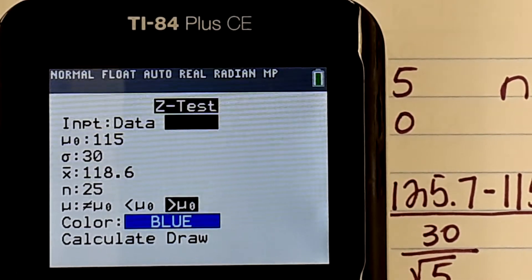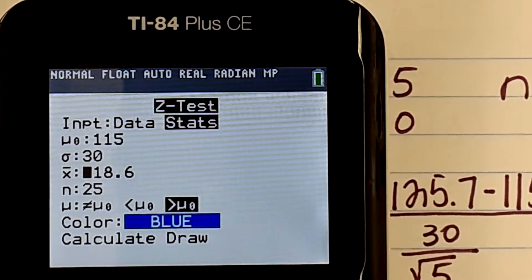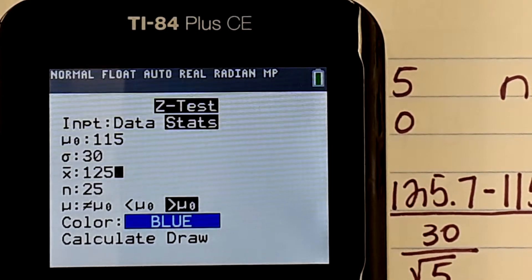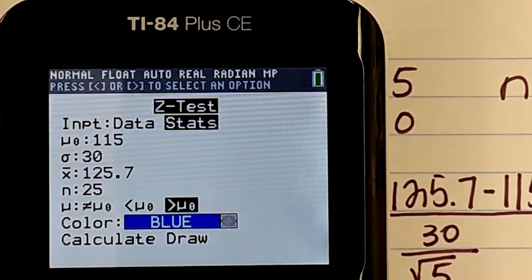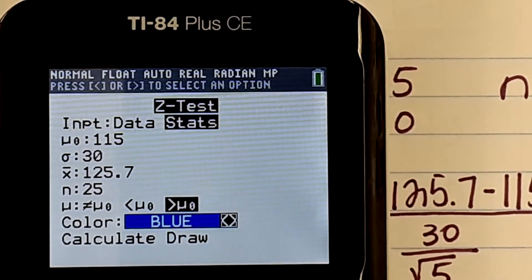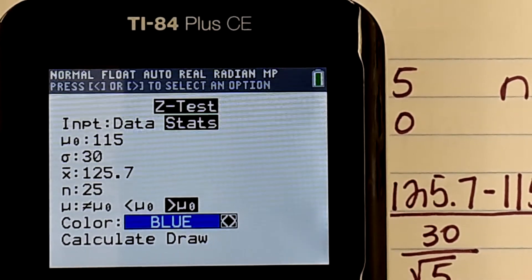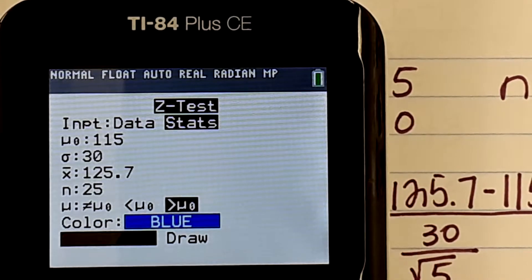So we have stats. What is our mu this time? Same thing, right? Our sigma is the same, but what's our x-bar? Our sample size is still the same. You guys, our alternative hypothesis is still the same. She is still saying the study habits of people that are older than 30 are better than young people. Okay. And then we're going to hit calculate.